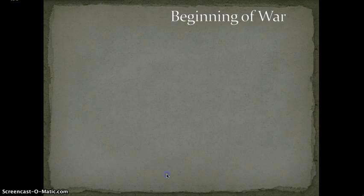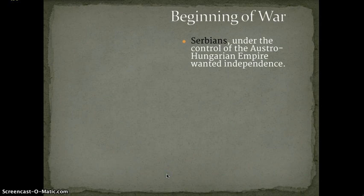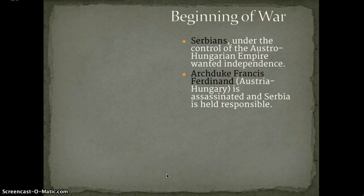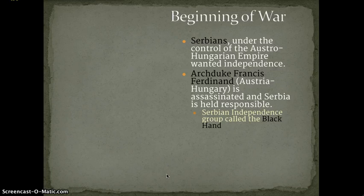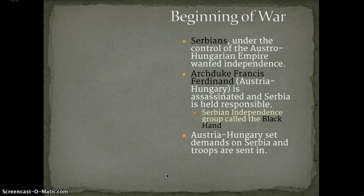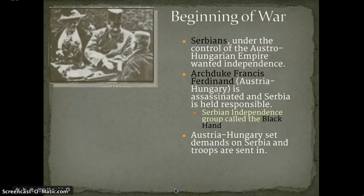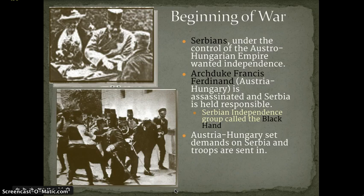So then the war — how did it actually break out? It's funny. It's actually one little event that sets off this powder keg. Serbians, who were under the control of the Austro-Hungarian Empire, wanted their independence. The Archduke Franz Ferdinand of Austria-Hungary was visiting Serbia in Sarajevo, and while he was there, he was assassinated by Serbians — a group called the Black Hand was responsible for his assassination. Austria-Hungary set demands on Serbia, and troops were sent in to enforce those demands, establishing martial law, and as a result, war broke out.